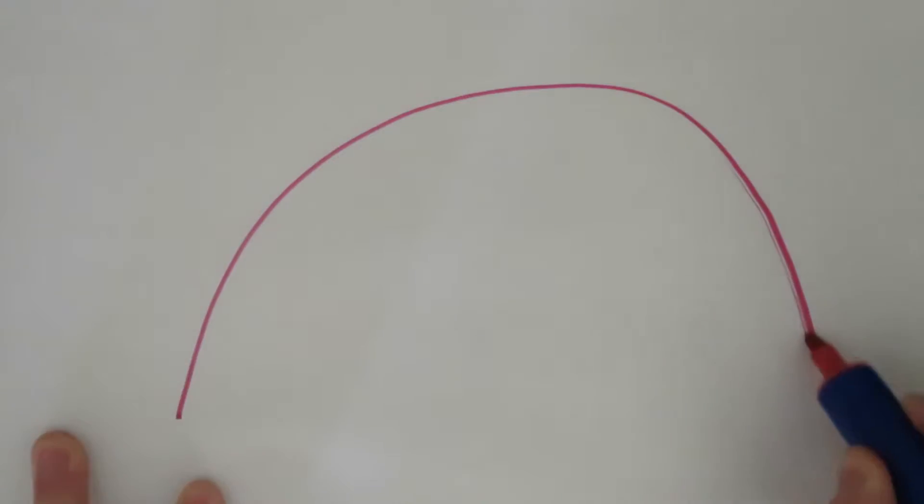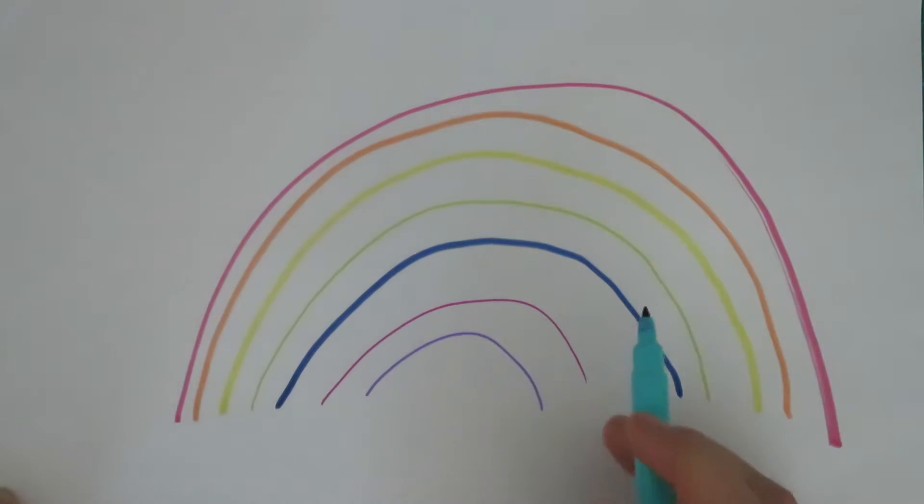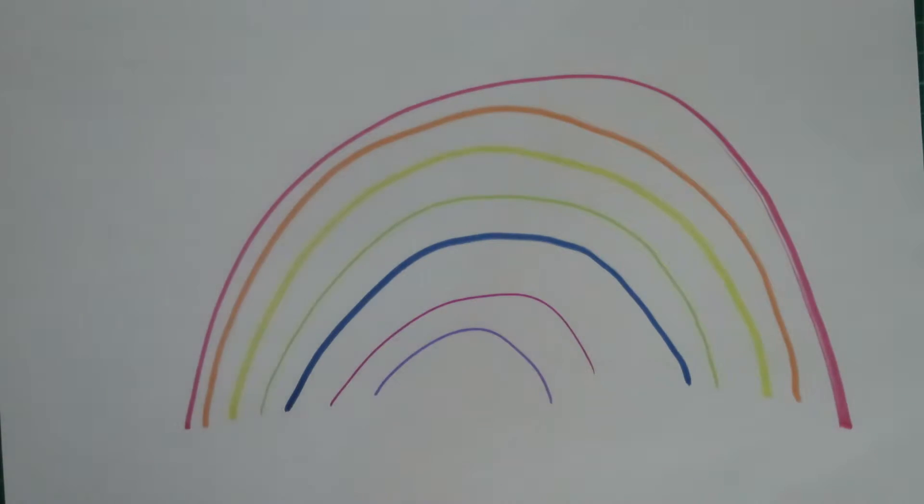A rainbow is formed when sunlight shines through lots of tiny clusters of water, all acting as prisms. And notice how the blue light pulls a much tighter curve than the red light has.